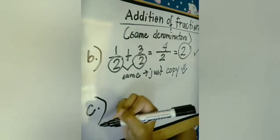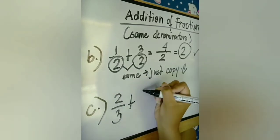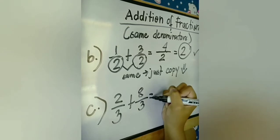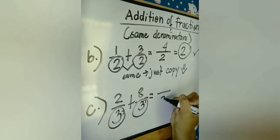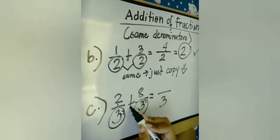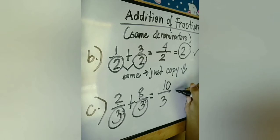Okay, letter C. Letter C is 2 over 3 plus 8 over 3. Okay, again, just copy when the denominators are the same and add the numerator. 2 plus 8 is 10. And 10 divided by 3, the answer is 3 and 1 third.